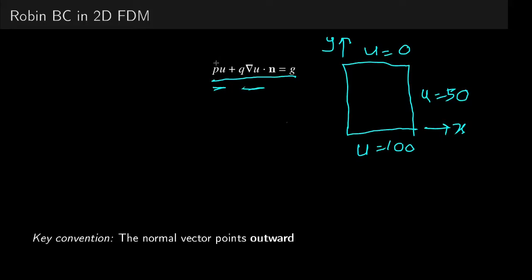More specifically, the normal component of the gradient of U is what we want. Now, when we look at the normal component, you want to look at how we define the normal vector on the boundary. So by convention, the normal vector always points outward. Now, P and Q are simple coefficients and G is the right-hand side value.